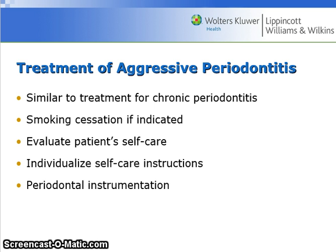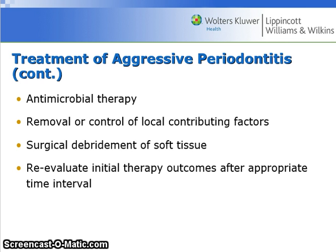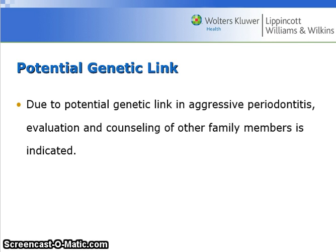Treatment of aggressive periodontitis is similar to treatment for chronic periodontitis, including smoking cessation, evaluation of patient self-care, individualized self-care instructions, and periodontal instrumentation, as well as antimicrobial therapy, removal or control of local contributing factors, surgical debridement of soft tissue, and re-evaluation of initial therapy outcomes after an appropriate time interval. Due to a potential genetic link in aggressive periodontitis, evaluation and counseling of other family members is indicated.